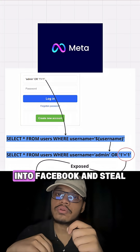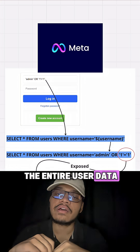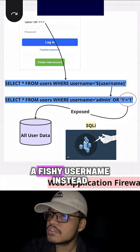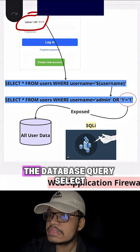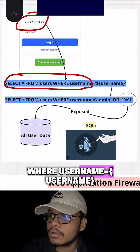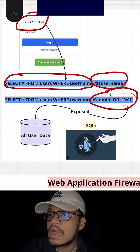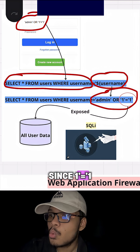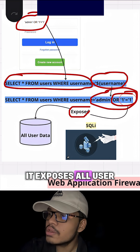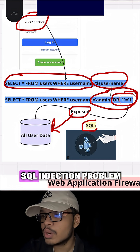Do you think someone could login into Facebook and steal the entire user data with a simple command? Yes. By entering a fishy username instead of a valid username, the database query selects star from user where user is equal to dollar user. The username turns into the fishy command, and since 1 is equal to 1 is always true, it exposes all user records to the attacker. This is a classic SQL injection problem.